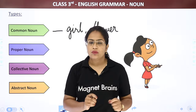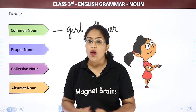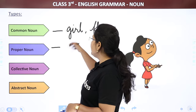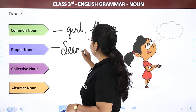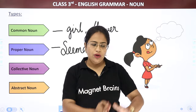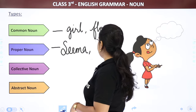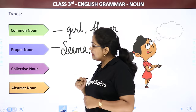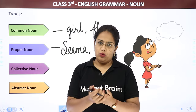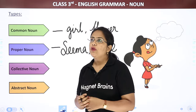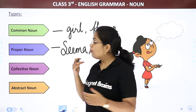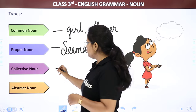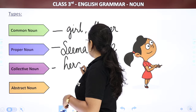Next is proper noun. Common can be anything. Proper means a proper person, a proper place, a proper animal. Like, a girl is there — but if we say Seema, now that is a proper noun. We are talking about a specific person: Seema.